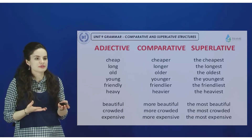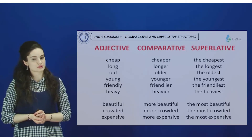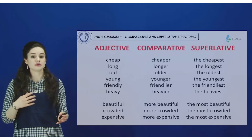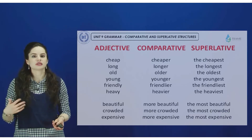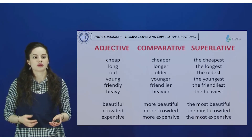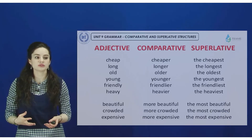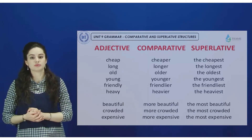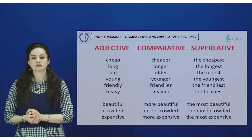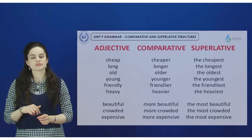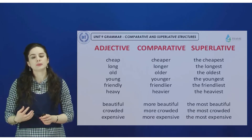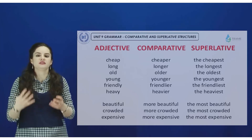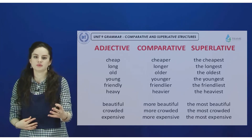Here are some examples of this rule: cheap → cheaper → the cheapest; young → younger → the youngest; and a more complicated word like 'crowded' → more crowded → the most crowded. 'Crowded' has only two syllables, but its letter structure makes it inconvenient to extend further with suffixes.